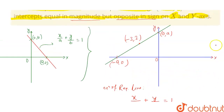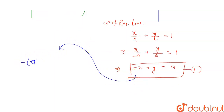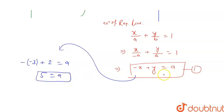Let's call this equation (1). Since this line passes through the point minus 3 comma 2, this point must satisfy the equation. Putting minus 3 for x and 2 for y: minus of minus 3 plus 2 equals a, so 3 plus 2 equals a, which gives us a equals 5.